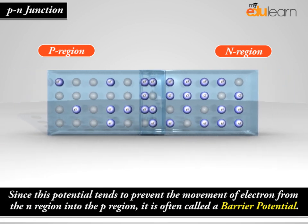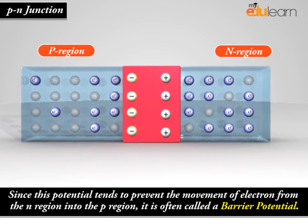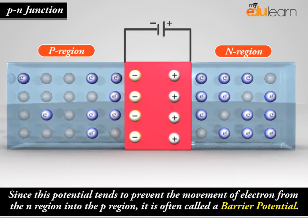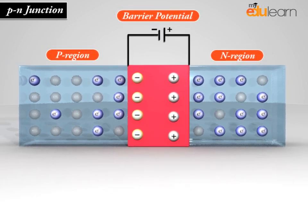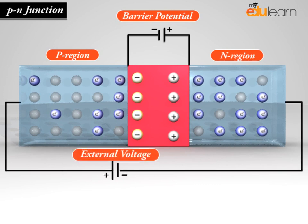Since this potential tends to prevent the movement of electrons from the N-region into the P-region, it is often called a barrier potential. This potential barrier must be overcome by an external voltage source to make the junction conduct.